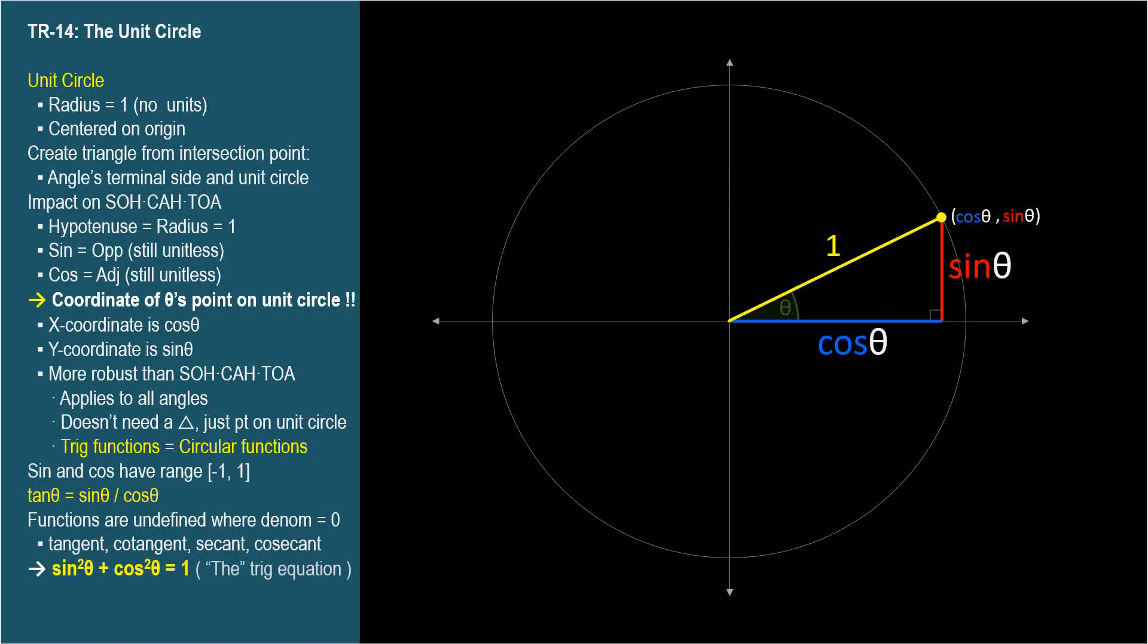We can read an angle's cosine and sine directly from the unit circle. This is an extremely important observation and essential to understand. The cosine and sine of theta are the x and y coordinates of theta's point on a unit circle.